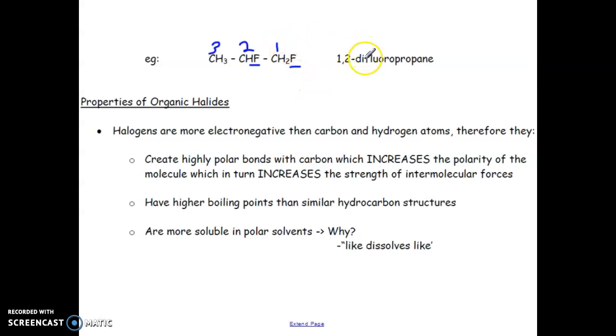Okay, so here we would have two fluorines. So notice that we use di, and there is one number for each branch. Okay, even if they're the same type, or even on the same carbon, you have to have one number per branch. So this is one, two, di, fluoropropane, right, because there's the three carbons, and they are single bonds.